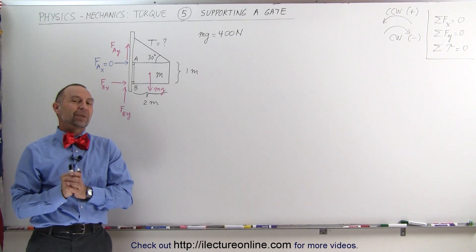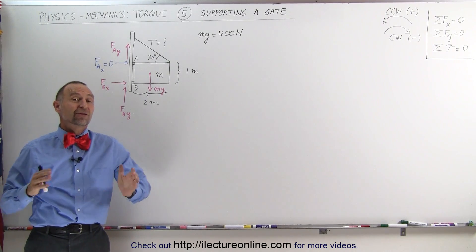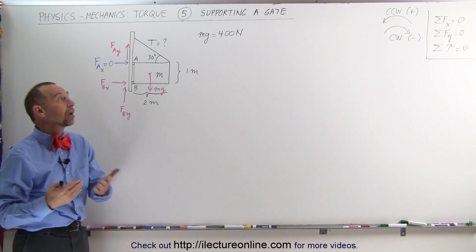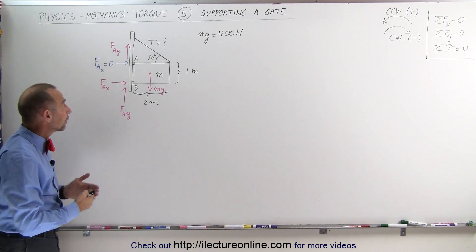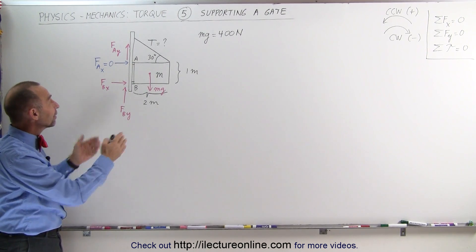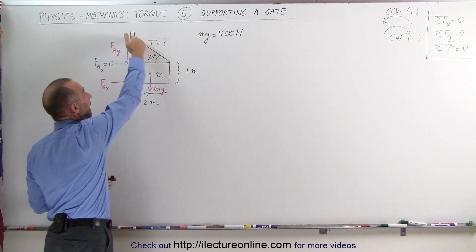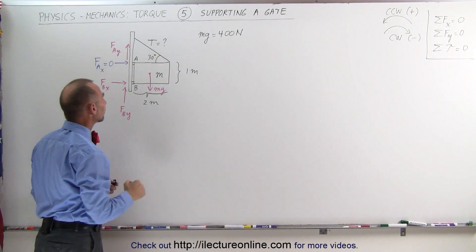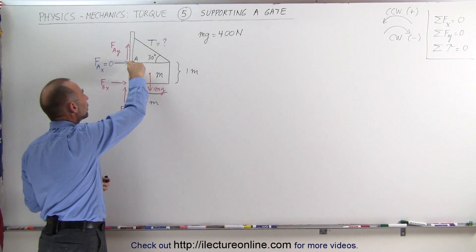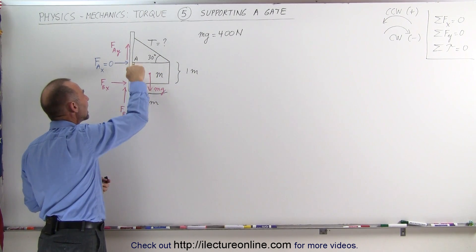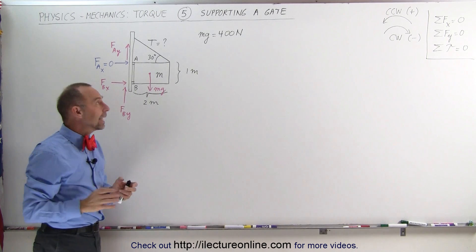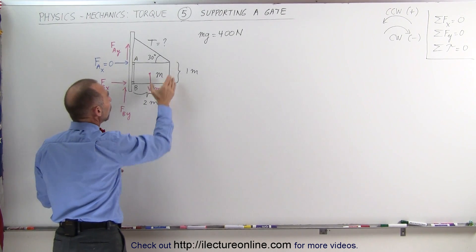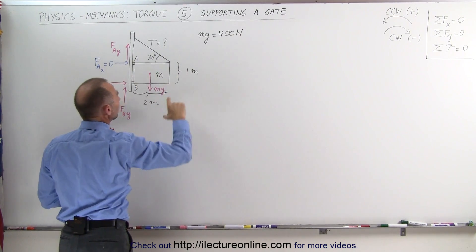Welcome to Lecture Online. Here's a very typical type of problem that can be solved using the torque concept. We have a gate suspended by a cable at an angle of 30 degrees with the horizontal. We have two hinges, A and B. The gate has a mass such that the weight is equal to 400 newtons.